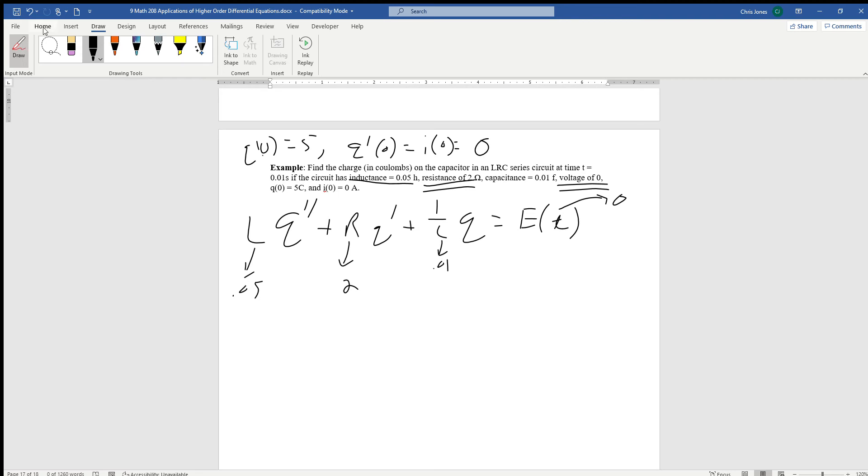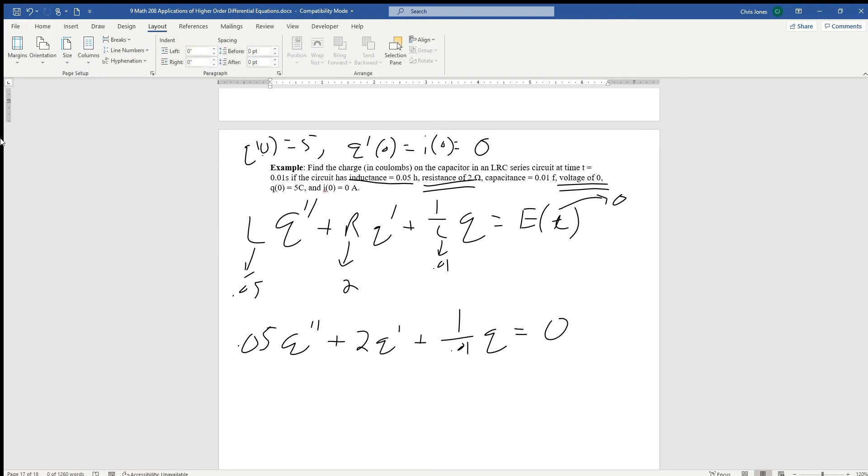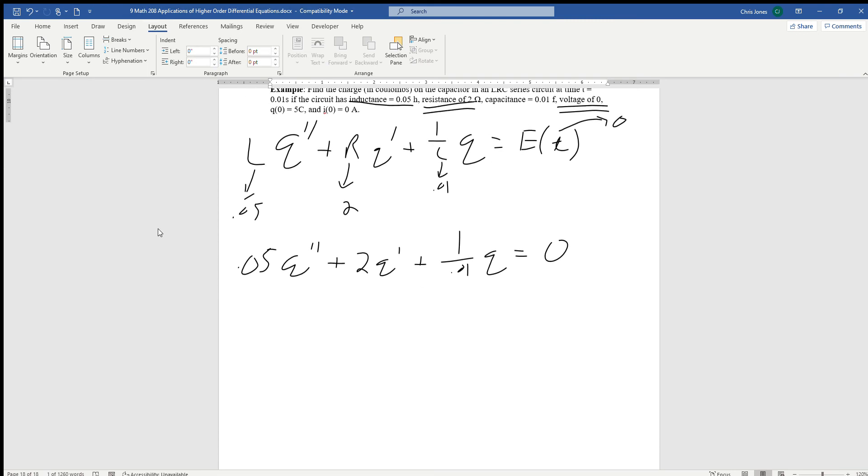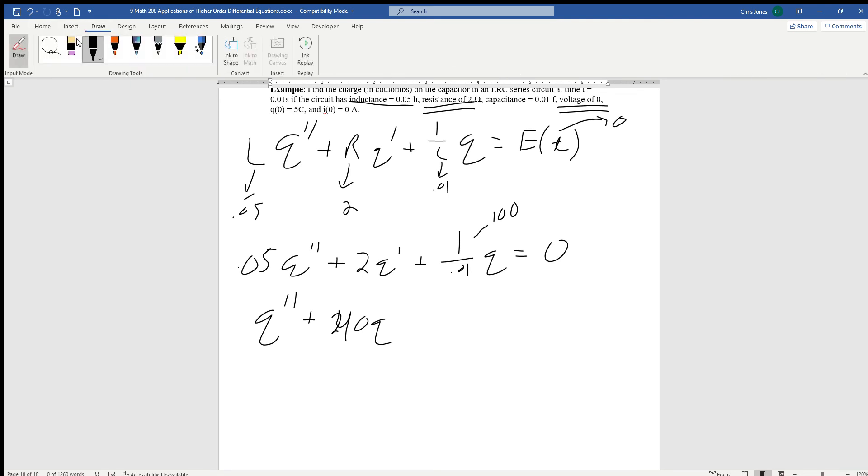Let's put it into the circuit equation. 0.05 Q double prime plus 2Q prime plus 1 over 0.01 Q equals zero. If we divide everything by 0.05, which is the same thing as multiplying by 20, this becomes 100. We should end up with Q double prime plus 40Q and that's going to be 2000, so 100 times 20, equal to zero.